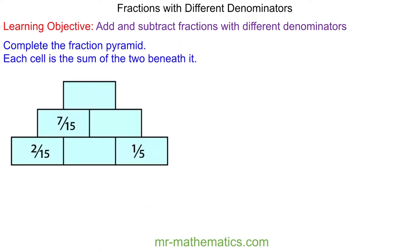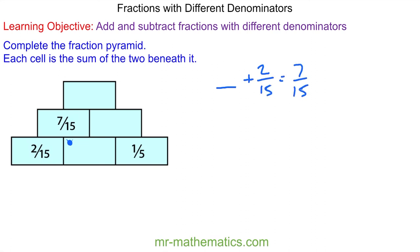Do you want to try and complete the fraction pyramid, where each cell on top is made by adding the two beneath? We'll begin by working out this value, where something added to two fifteenths equals seven fifteenths. You can see that we need five more fifteenths.